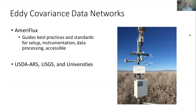To evaluate OpenET, we decided to leverage eddy covariance flux data. The eddy covariance technique is widely used to measure trace gases coming off the surface and vegetation. The largest publicly accessible repository of this data for stations in the United States is through Ameriflux, and the majority of stations used in our evaluation of OpenET came through Ameriflux. Networks like Ameriflux provide best practices and guidance to site technicians and PIs for station setup, instrumentation, calibration, maintenance techniques, and data processing. The data is standardized in format and publicly accessible.